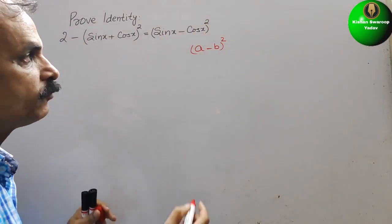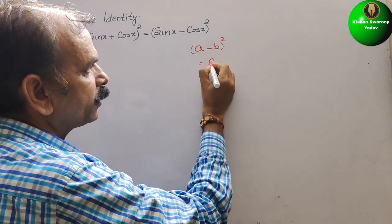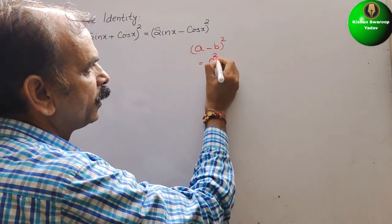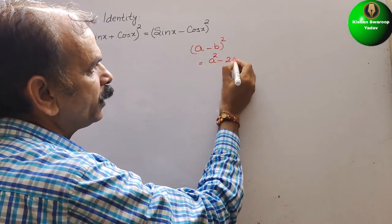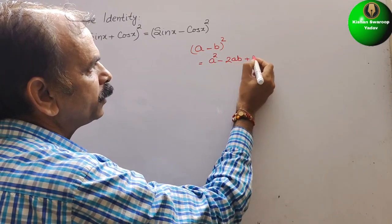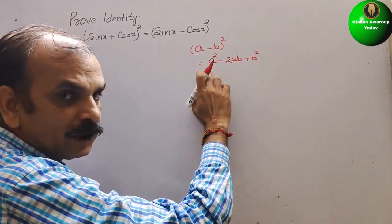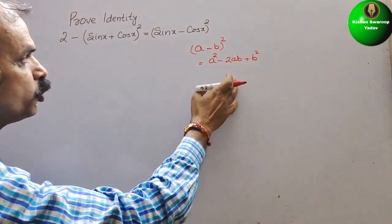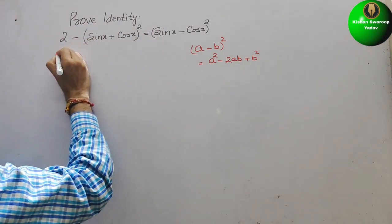That a minus b whole square is equal to a square minus 2ab plus b square. So, in this form, you should get your LHS.